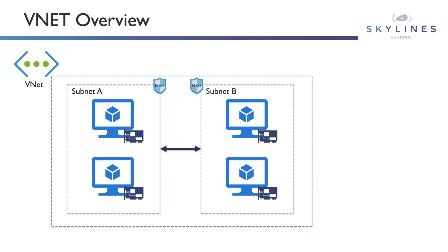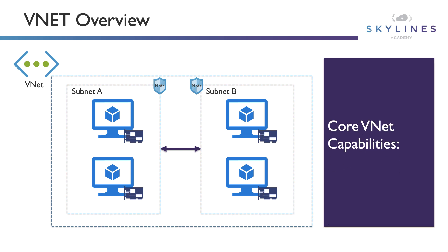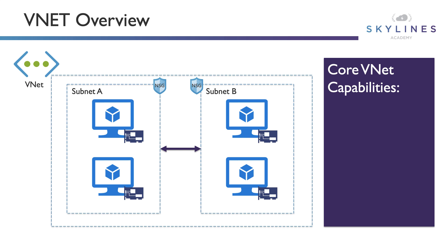If we want to start to filter traffic, we can use things like network security groups which act as a firewall — essentially to say whether traffic from subnet B can reach subnet A or not. You decide based on the rules that you create in those network security groups. Virtual networks are isolated by default. If you create a VNet, you can create multiple VNets all with the same address space in them. As long as they can't connect to each other, you're not going to really have any problems. It's only when you start peering them and connecting them where you have to think about the overlapping address space problem.